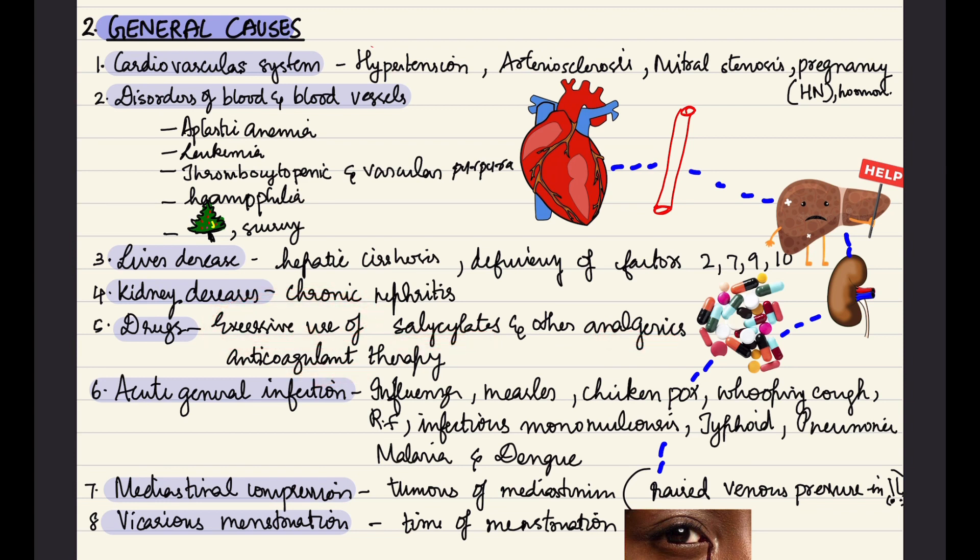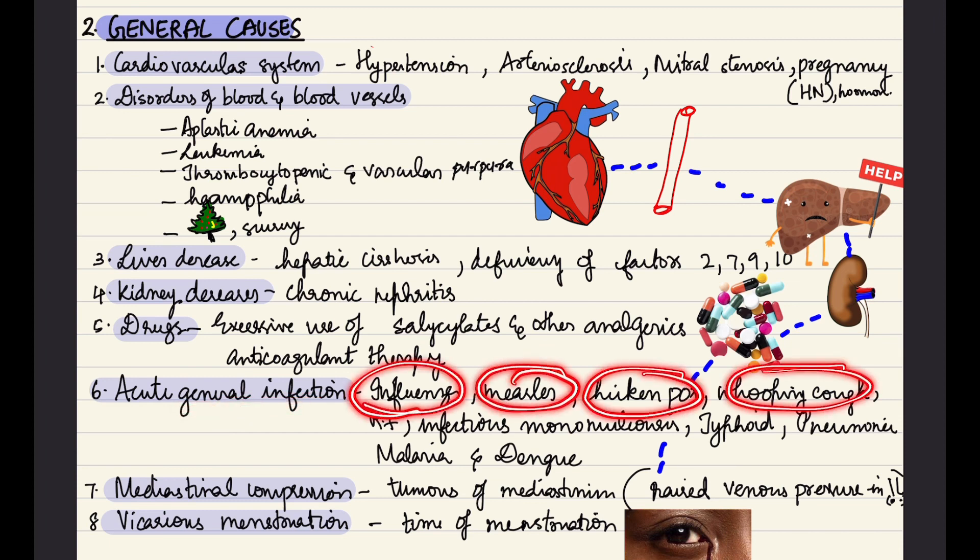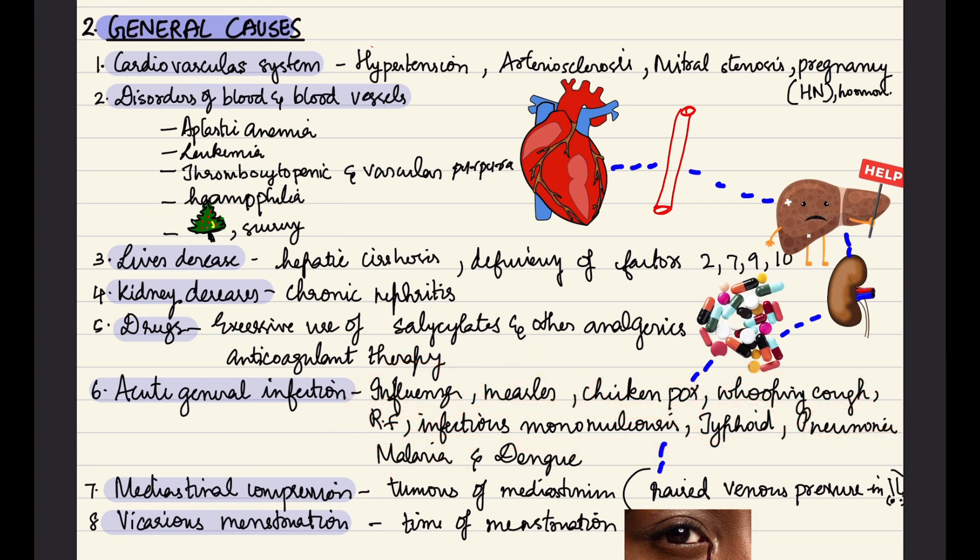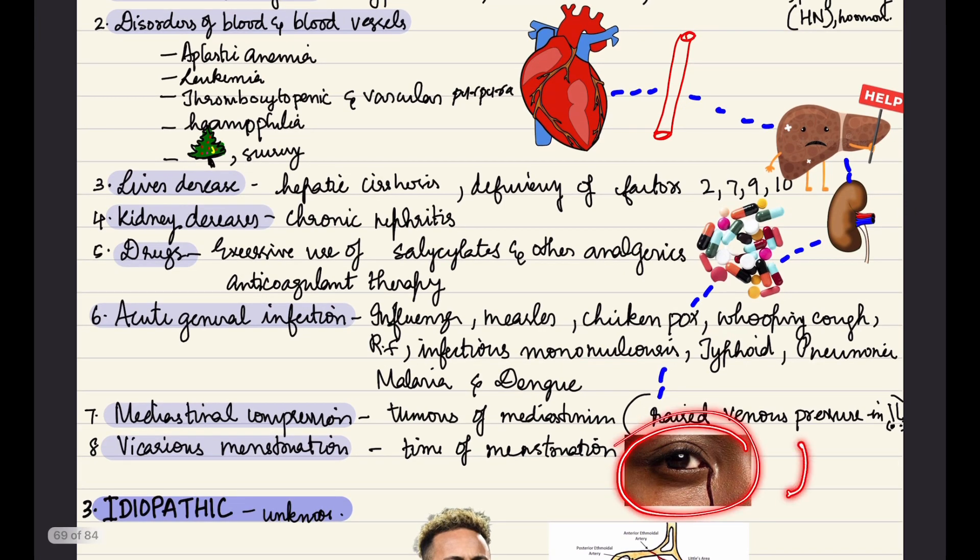We have acute general infections such as influenza, measles, chickenpox, whooping cough, rheumatic fever, infectious mononucleosis, typhoid, pneumonia, malaria, and dengue. Then we have mediastinal compression tumors of mediastinum, raised venous pressure. We have vicarious menstruation in which at the time of menstruation there is cyclical bleeding from extragenital organs such as eyes, nose, etc.